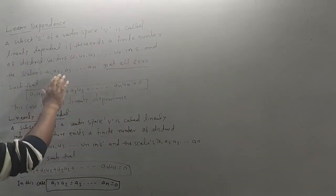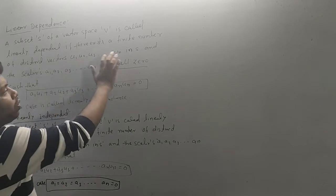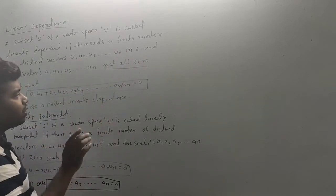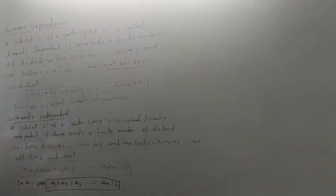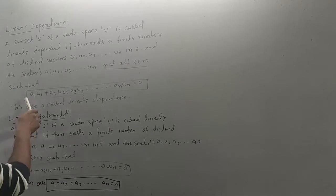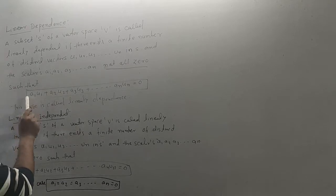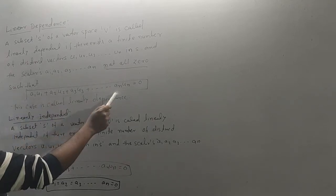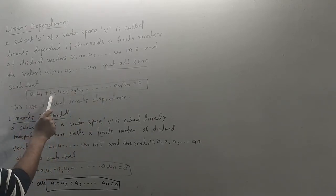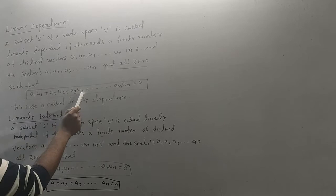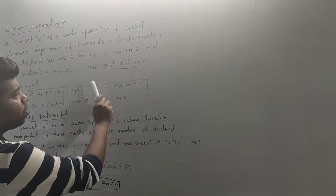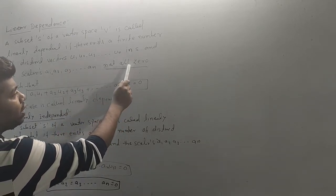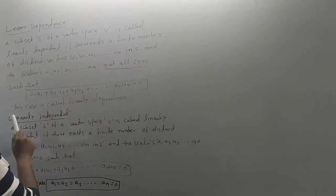Here U1, U2, U3 are vectors and A1, A2, A3 are scalars. We form a linear combination: A1·U1 plus A2·U2 plus A3·U3 equals zero, where not all scalars are zero.